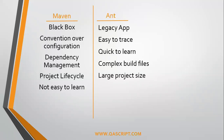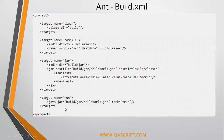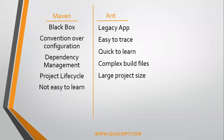In terms of learning curve, Ant is easier to learn compared to Maven because there are not as many things to learn in Ant, whereas there are a lot of concepts you need to know to work with Maven. Looking at the build files, it's quite complex in Ant compared to Maven. As you can see, the pom.xml file handles the entire build process in Maven — you just need to provide the group ID, artifact ID, and version, and optionally the packaging as jar, and it will build the jar file for you. In Ant, you would need to mention all those different steps in sequence to build the same jar.